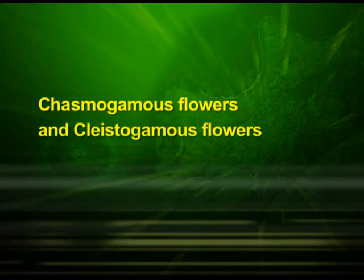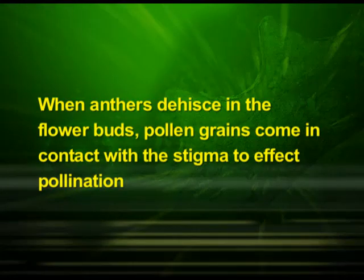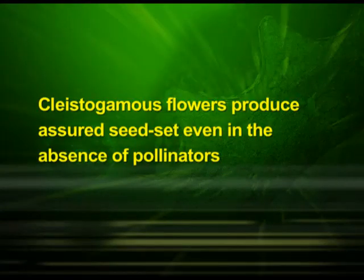They are chasmogamous flowers and cleistogamous flowers. We can observe the cleistogamous and chasmogamous flowers in this diagram. Chasmogamous flowers are similar to flowers of other species with exposed anthers and stigma. Cleistogamous flowers, on the other hand, do not open at all. In such flowers, the anthers and stigma lie close to each other. When anthers dehisce in the flower buds, pollen grains come in contact with the stigma to effect pollination. Thus, cleistogamous flowers are invariably autogamous as there is no chance of cross-pollination. Cleistogamous flowers produce assured seed set even in the absence of pollinators.